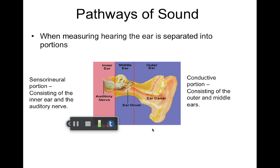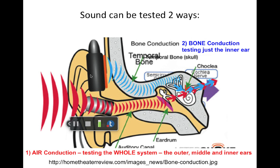When we measure sound, we talk about conductive hearing and sensorineural hearing. With conductive hearing, sounds are collected and conducted through the ear canal to the middle ear. In the sensorineural portion, sounds are processed up to the brain. So we have the conductive pathway — the ear canal and middle ear — and the sensorineural pathway — the cochlea and auditory nerve. By testing sound two different ways, we can figure out where someone's hearing loss is.